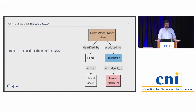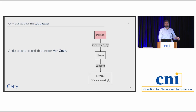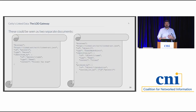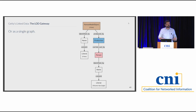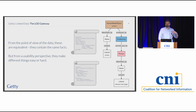When we think about discovery, imagine a record for the painting Irises and a separate record in a different system for Van Gogh as an artist. You could think of these as two different documents — print them out on paper and hand them to people. But you could also look at it as a single piece of information: since Van Gogh painted Irises, you could glue them together and have one viewpoint. From the point of view of the data itself, it's the same thing — same amount of information — but they make different things differently easy or hard in our ecosystem.